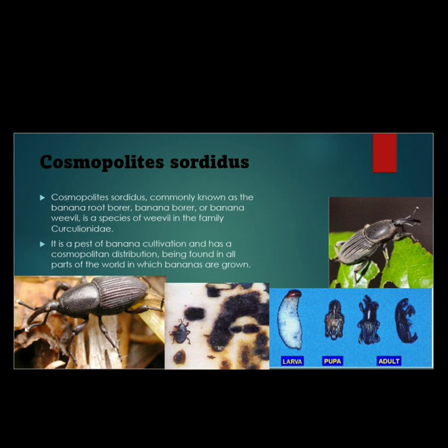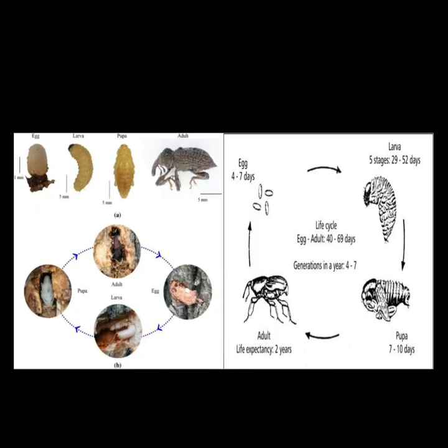Cosmopolites sordidus is a major pest of banana. It belongs to the family Curculionidae, which is the most significant pest of banana cultivation and has a cosmopolitan distribution in bananas growing all over the world. The life cycle: first, the egg stage lasts 4 to 7 days, larva 25 to 30 days, then pupa 7 to 10 days, and adult life span is approximately 2 years.